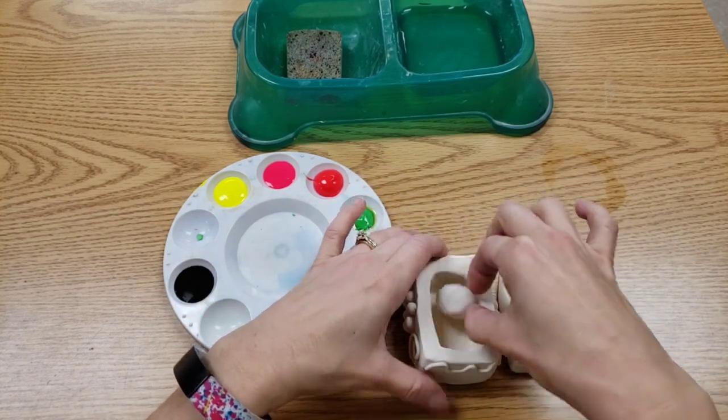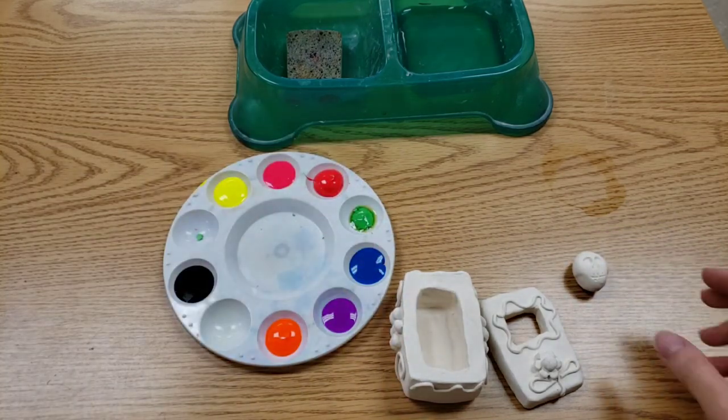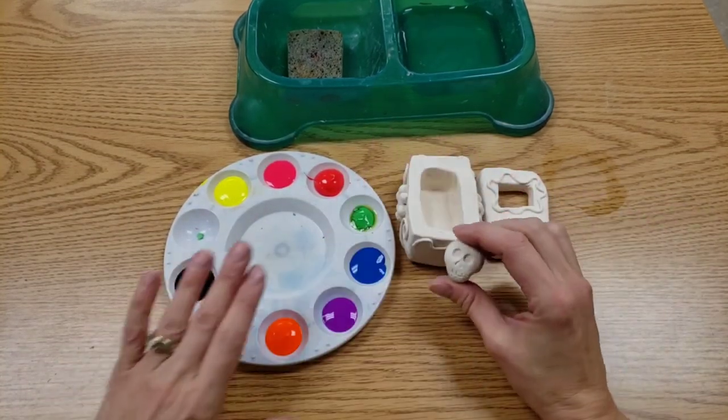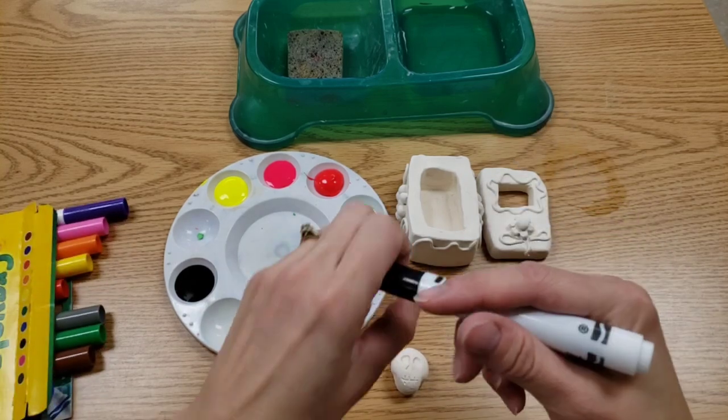Lid comes off, head comes out if it was inside the box. Because your heads are tiny, instead of using paint to decorate them, we can use good old-fashioned markers.